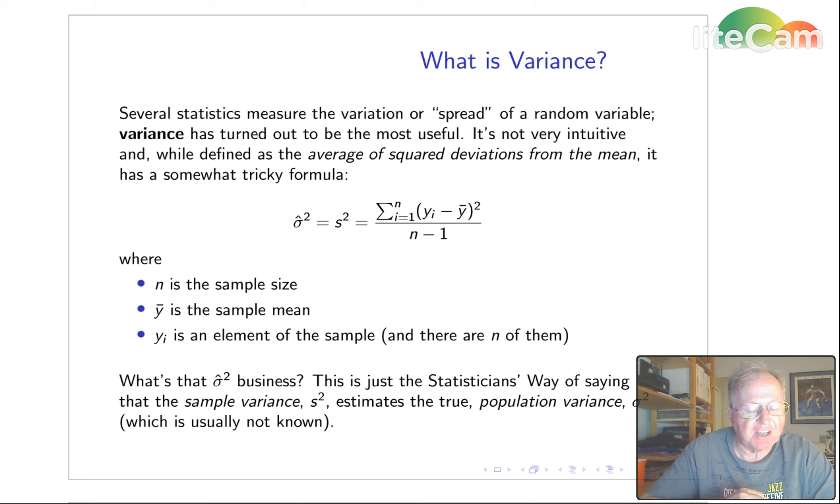It's defined to be the average of squared deviations from the mean. That's these guys right here. And notice the average, it's kind of funny because it's n minus 1, which is required to make it unbiased.